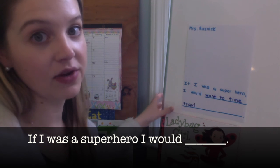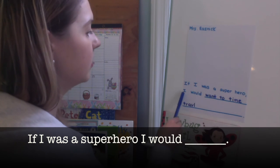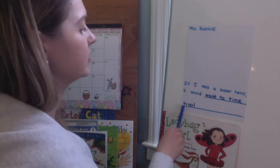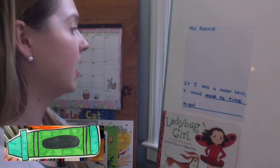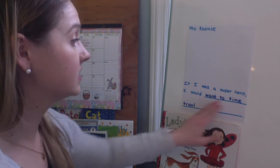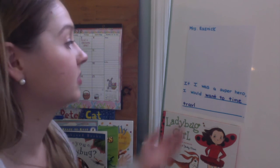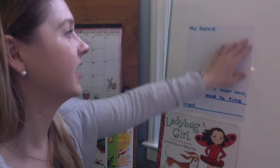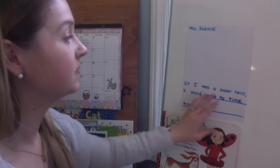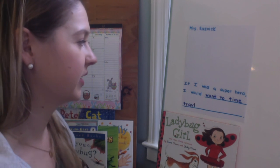Let me go back and read my sentence and make sure that I'm happy with what I wrote. 'If I was a superhero, I would want to time travel.' Period. Excellent. Now, just like always, I want to go back and make sure that my picture matches my sentence. I describe time traveling as traveling through time, and for me, I would want to travel back and get to visit the dinosaurs. So I would probably draw a picture of myself and then a picture of dinosaurs. That would be my superpower — that's not something that we can do normally as humans, but if I was a superhero, I think that would be very cool.